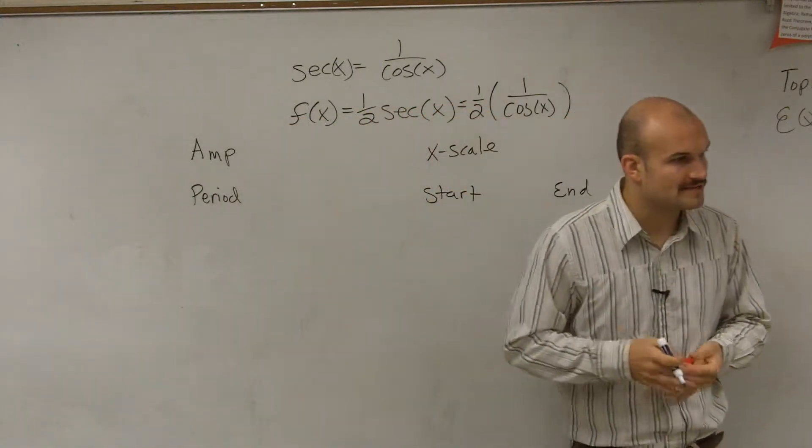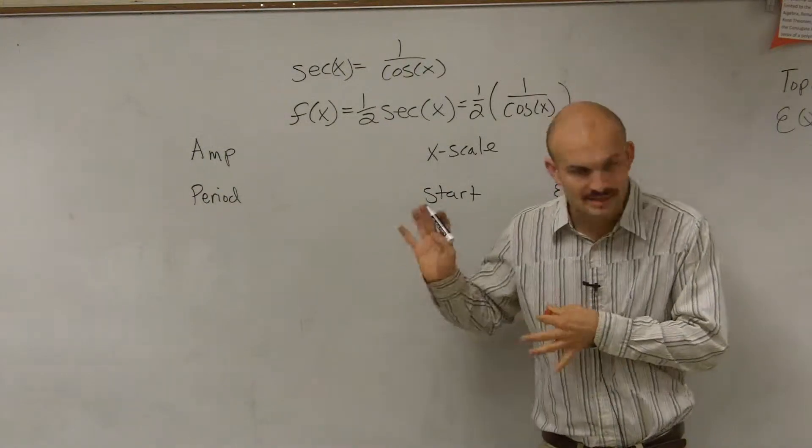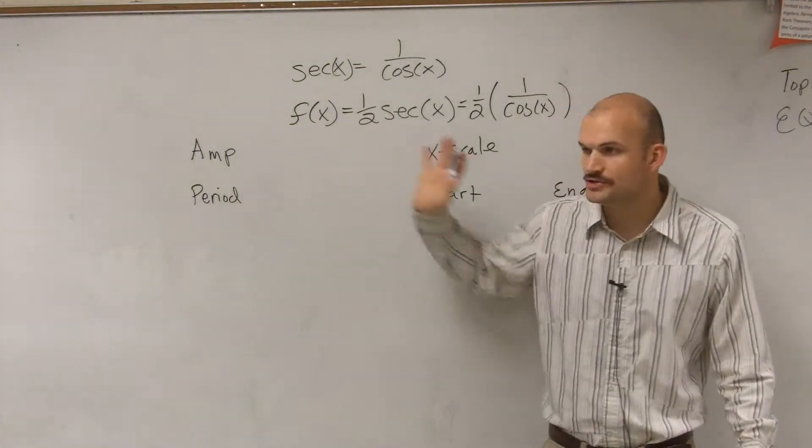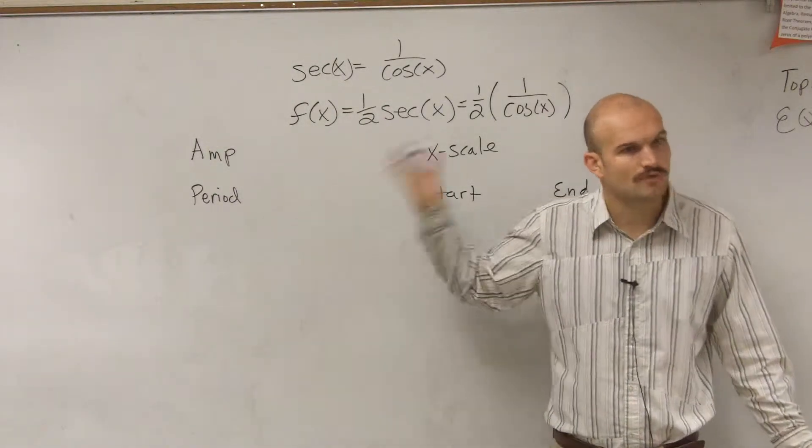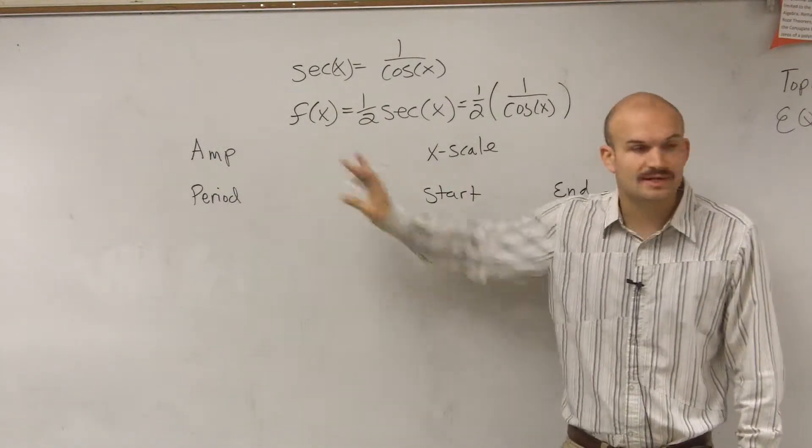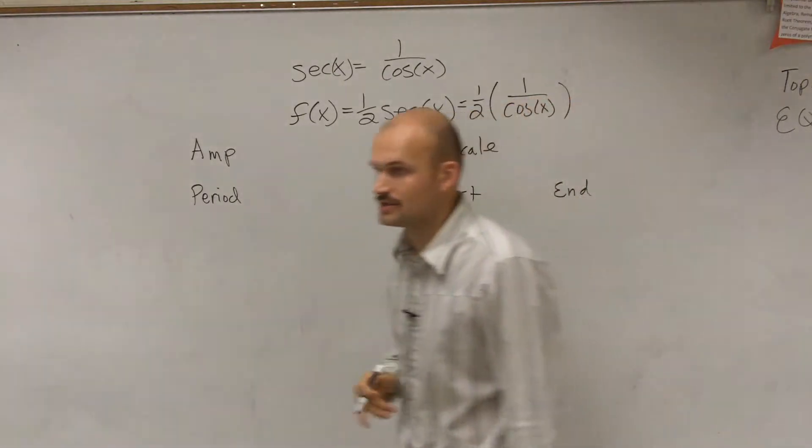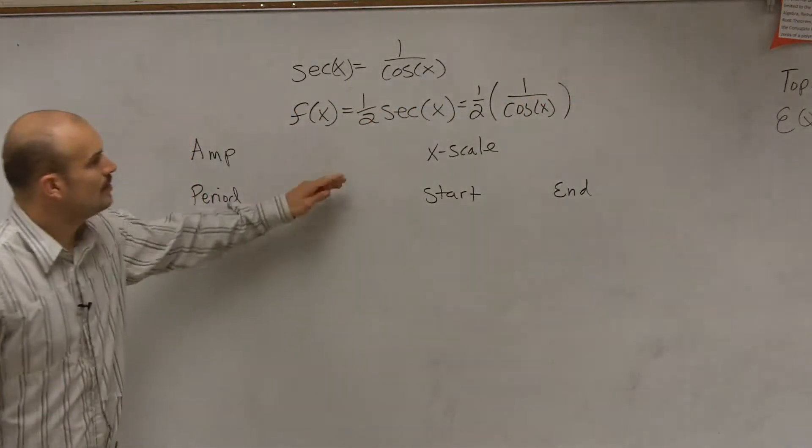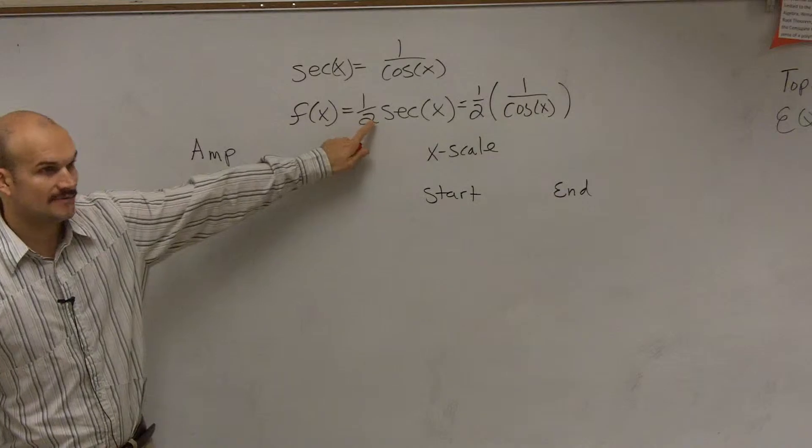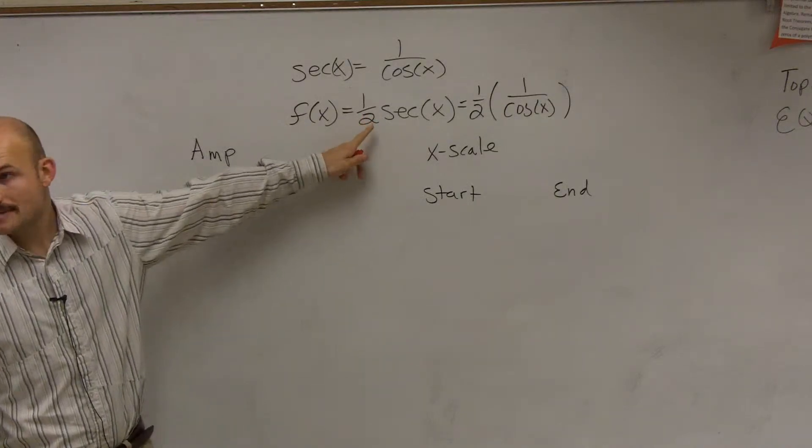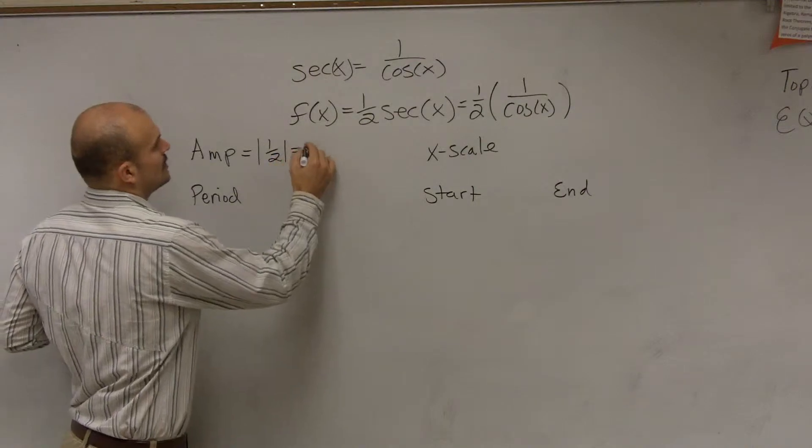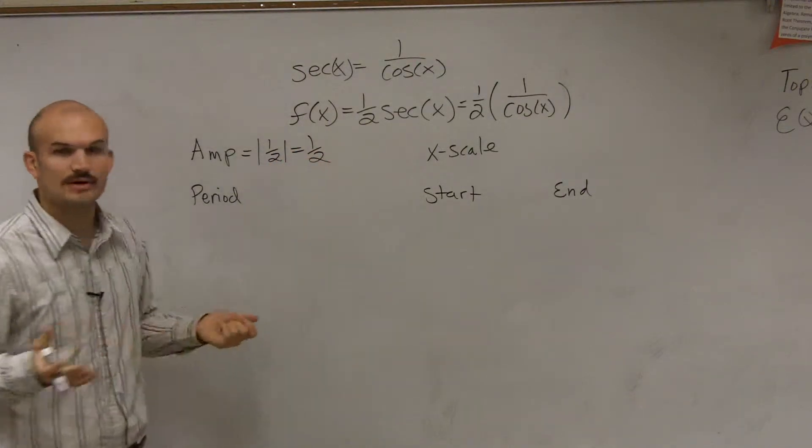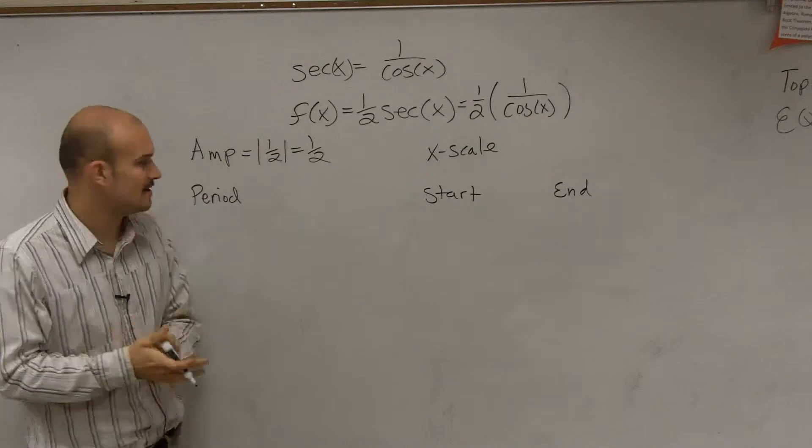For all of your graphs on all of your work that you do on a test, a quiz, or homework, I want you to be able to show me all this information. Even if you don't have to show all the work that I do, show all this information. The amplitude, remember, is the absolute value of a. So in this case, you can say it's absolute value of 1 half, which equals just 1 half.